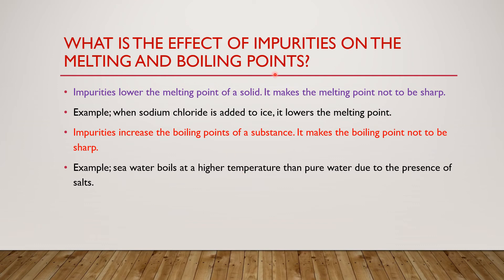Now we ask: what is the effect of impurities on melting and boiling points? First, impurities lower the melting point of a solid. It makes the melting point not sharp — it becomes curved. For example, when sodium chloride is added to ice, it lowers the melting point, so the ice starts to melt faster or earlier than expected.